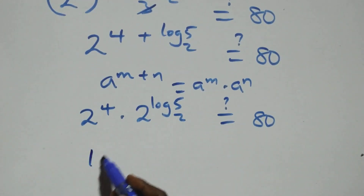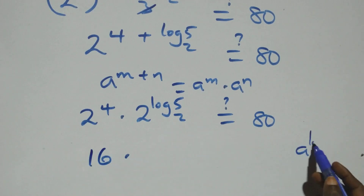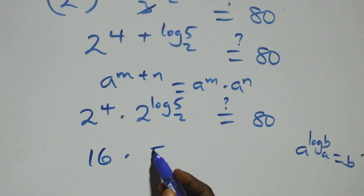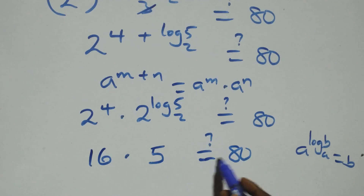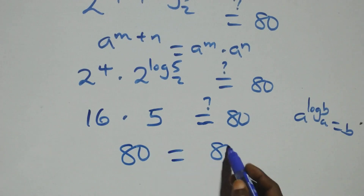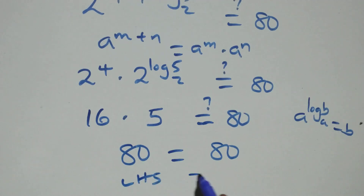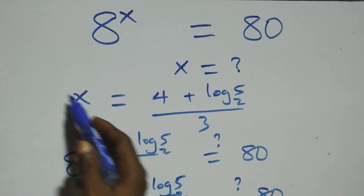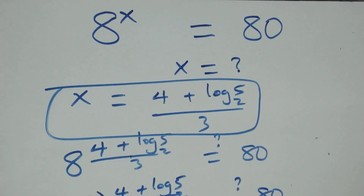Here, 2 raised to power 4 equals 16. This follows the rule that A raised to power log base A of B equals B, so 2 raised to power log₂5 equals 5. And 16 times 5 gives us 80, which equals 80. Therefore left-hand side equals right-hand side, and we conclude that X equals 4 plus log₂5, all over 3, satisfies this given problem. Thank you for watching — don't forget to subscribe for more videos, turn on the notification bell, share this video, give a thumbs up, and put your comments. See you next class, bye for now.